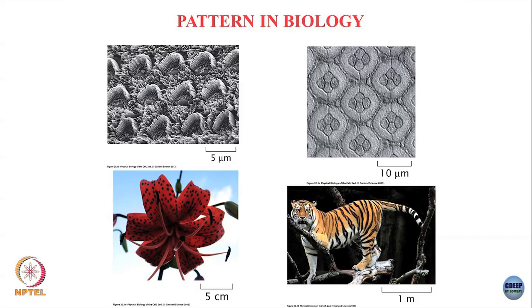These are rod and cone cells in the eye of the fruit fly Drosophila, which is on the order of around 10 microns. Then if you look at flowers you will often see very beautiful spots and patterns appearing — these are on the scale of centimeters. Or you could go to even larger scales: the stripes of a tiger or a zebra are on the order of a meter, where you again have this reliable patterning of pigments.